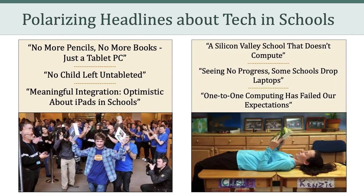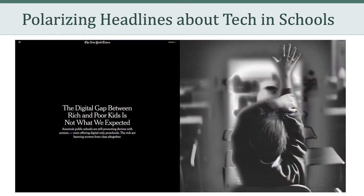Now let me show you some contrasting headlines. 'A Silicon Valley school that doesn't compute.' 'Seeing no progress, some schools drop laptops.' 'One-to-one computing has failed our expectations.' So my question is, what's going on here? How can there be these polarizing headlines, where on one end of the continuum we have very enthusiastic and optimistic headlines about educational technology, whereas on the other end we have very critical, somewhat negative, or at least questioning headlines about educational technology?